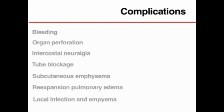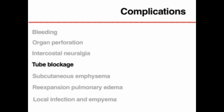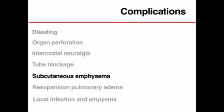Complications associated with chest tube insertion include bleeding and hemothorax; traumatic perforation of the lung, heart chambers, diaphragm, or intra-abdominal organs; intercostal neuralgia due to trauma of the intercostal neurovascular bundle; intermittent blocking of the tube with clot or debris; subcutaneous emphysema; re-expansion pulmonary edema due to more than 1 to 1.5 liters of fluid drainage in less than 30 minutes; infection of the drain site; and empyema.